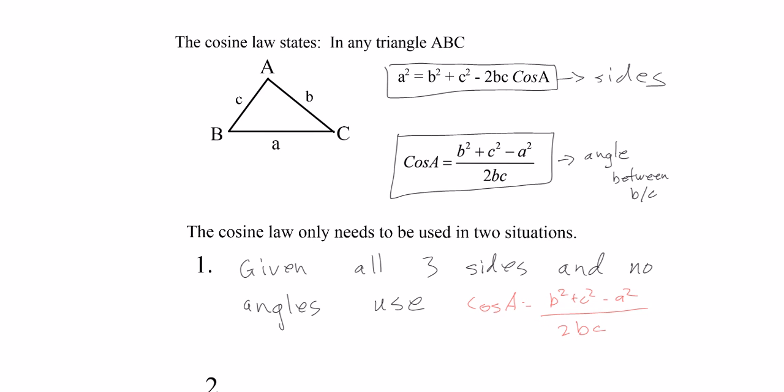We have three angles and we're looking for the A side. We take the other two sides, B and C, square them, subtract A squared, and divide by 2BC. That's what we use.